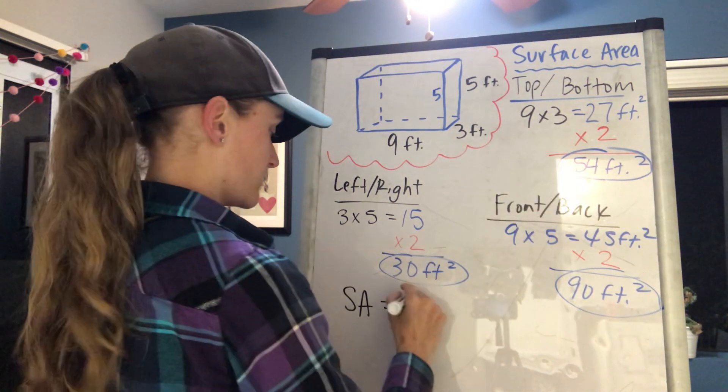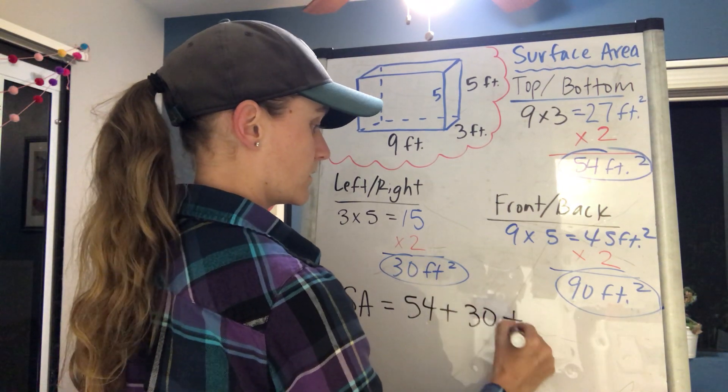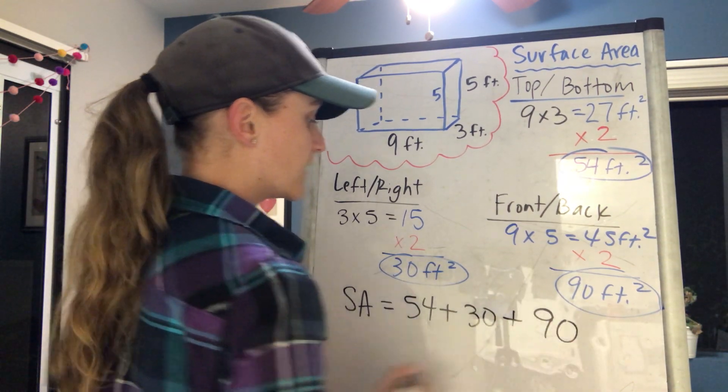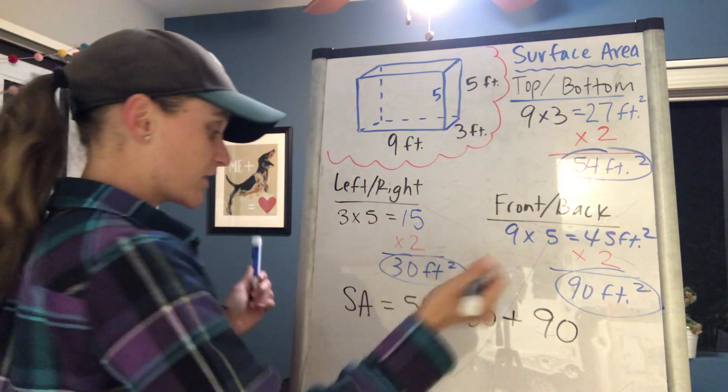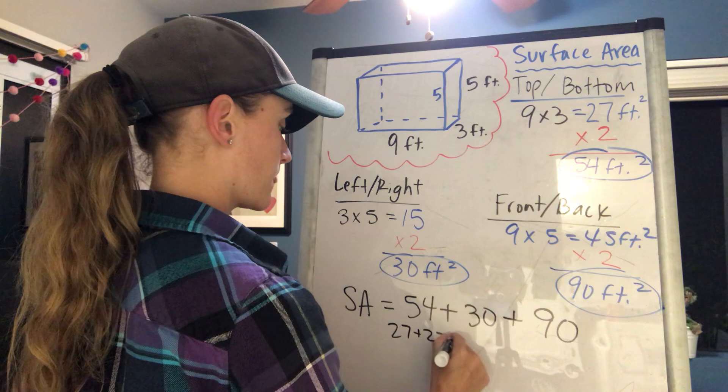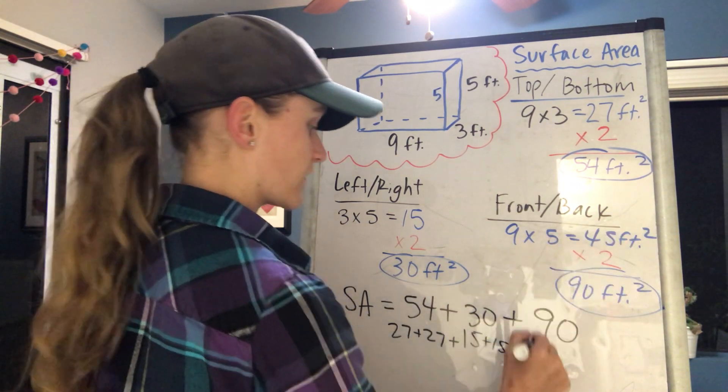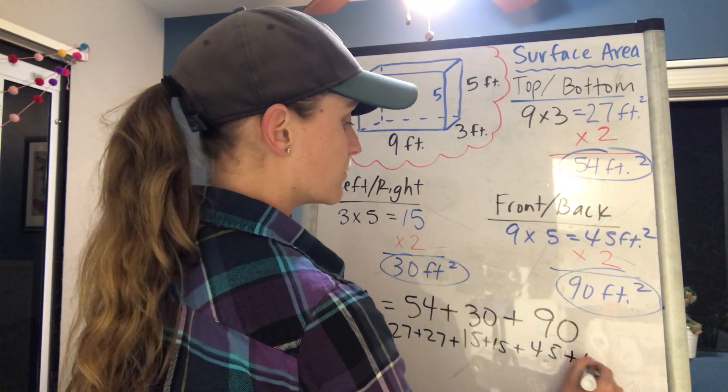I'm gonna add 54 plus 30 plus 90. And if I was to break it down, I could have said I'm gonna add 27 plus 27 plus 15 plus 15 plus 45 plus 45, and you would have been able to see that this is the top, the bottom, the left, the right, the front, and the back.